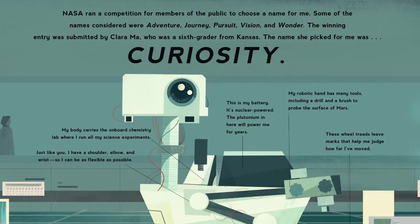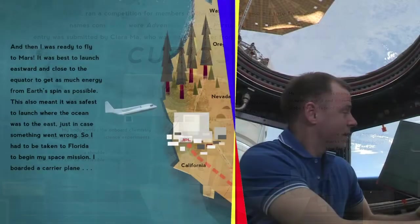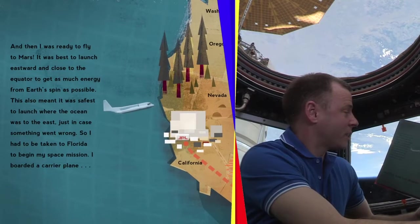NASA ran a competition for members of the public to choose a name for me. Some of the names considered were Adventure, Journey, Pursuit, Vision, and Wonder. The winning entry was submitted by Clara Ma, who was a sixth grader from Kansas. She picked the name Curiosity. And then I was ready to fly to Mars.